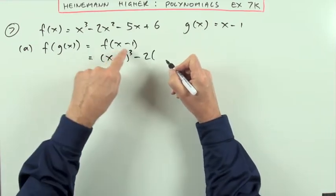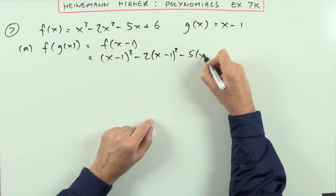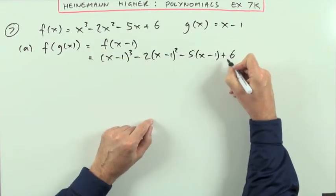So I'll have (x minus 1) cubed, that looks a bit of a pest. It does minus 2 times the square of it, that's not so bad, minus 5 times it, that's okay, and plus 6.